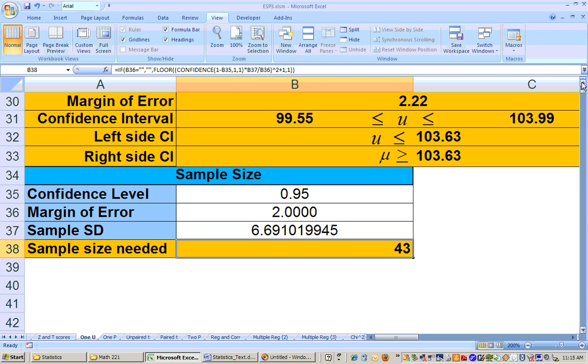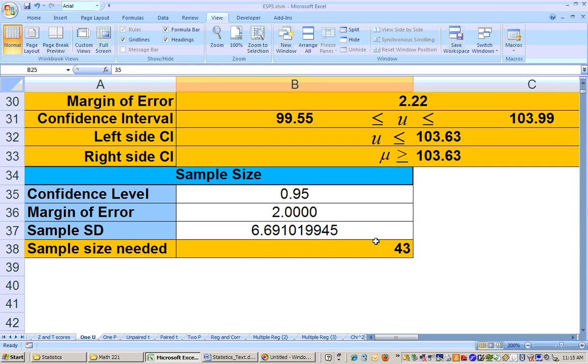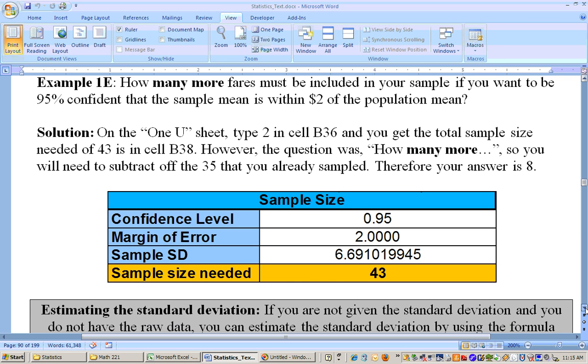That's what we had to begin with. Look here, 35 air flights were sampled. So you need to take the 35 off of the 43, and that gives you 8 more air flights that need to be sampled. And that would be the answer to that problem.